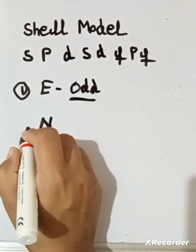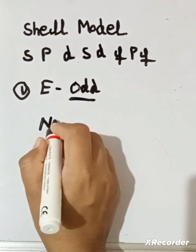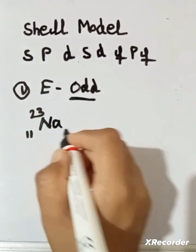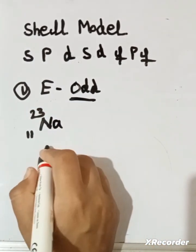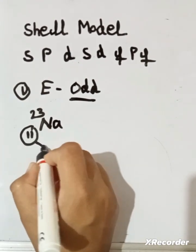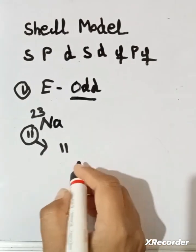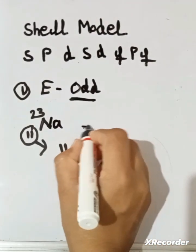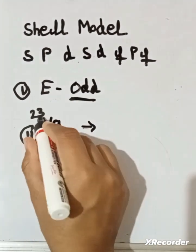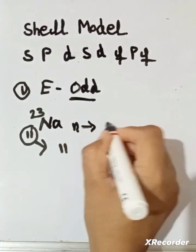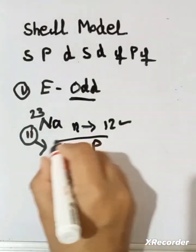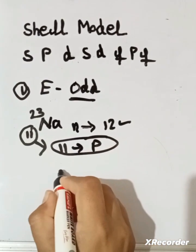For example, consider Na-23 (A=23, Z=11). This is an even-odd case. The neutron number is 23 minus 11 = 12, which is even. The proton number is 11, which is odd. So only the odd nucleon (the proton) contributes. We only discuss this odd case.